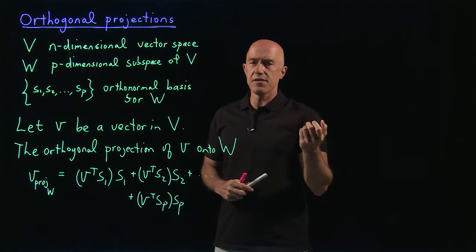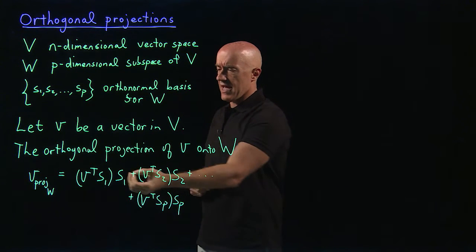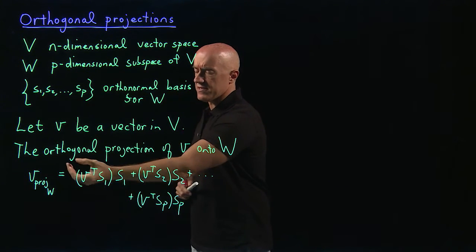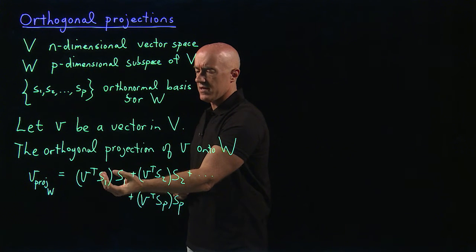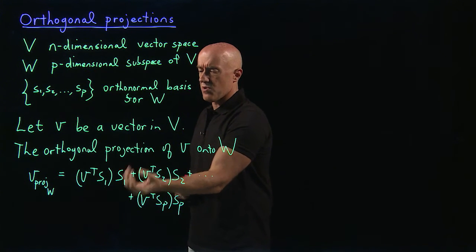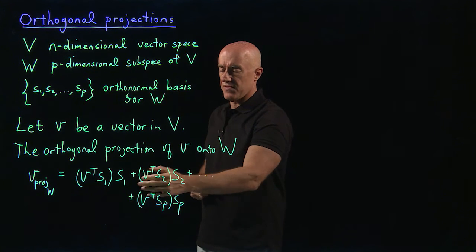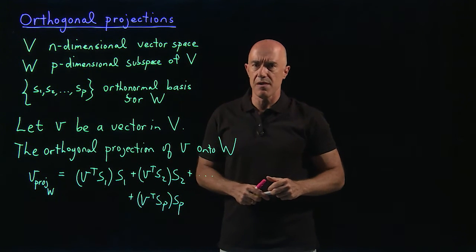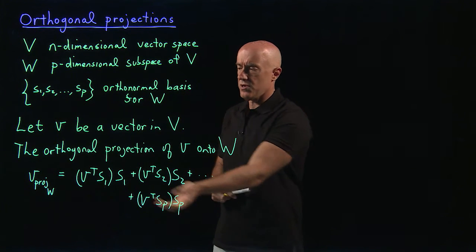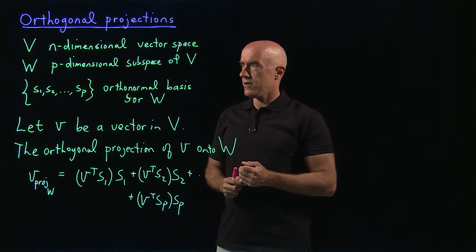That's the definition of the orthogonal projection of v onto W. The way to think about this is that it's the piece of v along s1, multiplied by s1, plus the piece of v along s2, multiplied by s2, and so on.